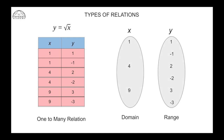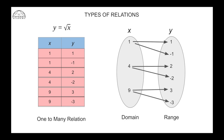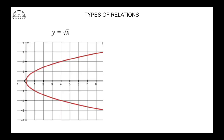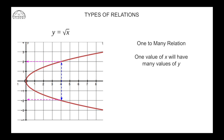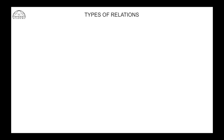In the bubble diagram for a one-to-many relation, one input x maps to two different values of y. On the graph of y = √x, one value of x can map onto two different values of y. This is a one-to-many relation: one value of x will have many values of y.